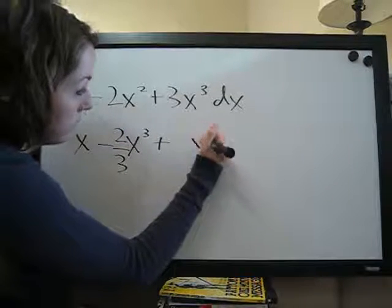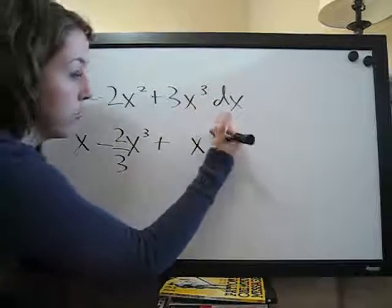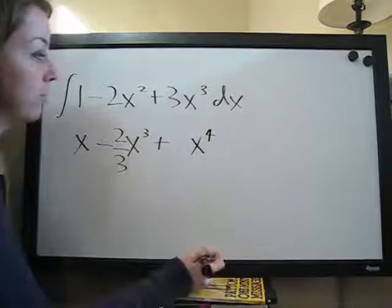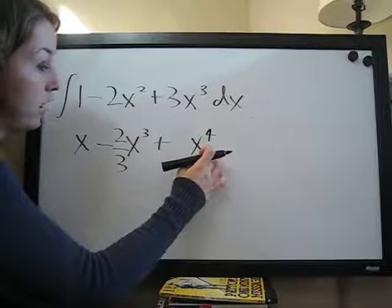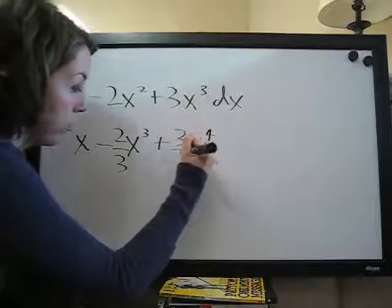Plus, write the x. Add 1 to the exponent. 3 plus 1 is 4. So our new exponent is 4. And then 3, the coefficient, divided by the new exponent, 3 over 4.